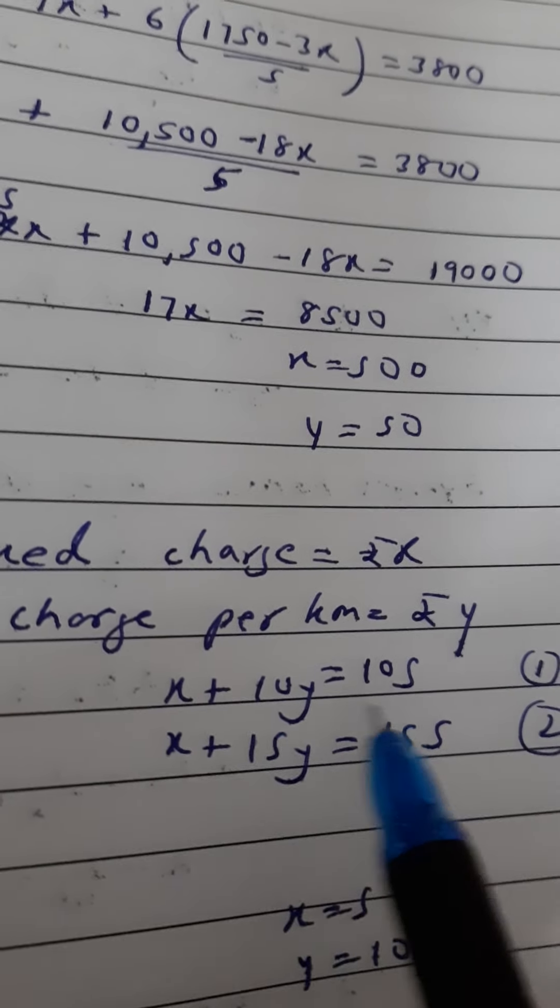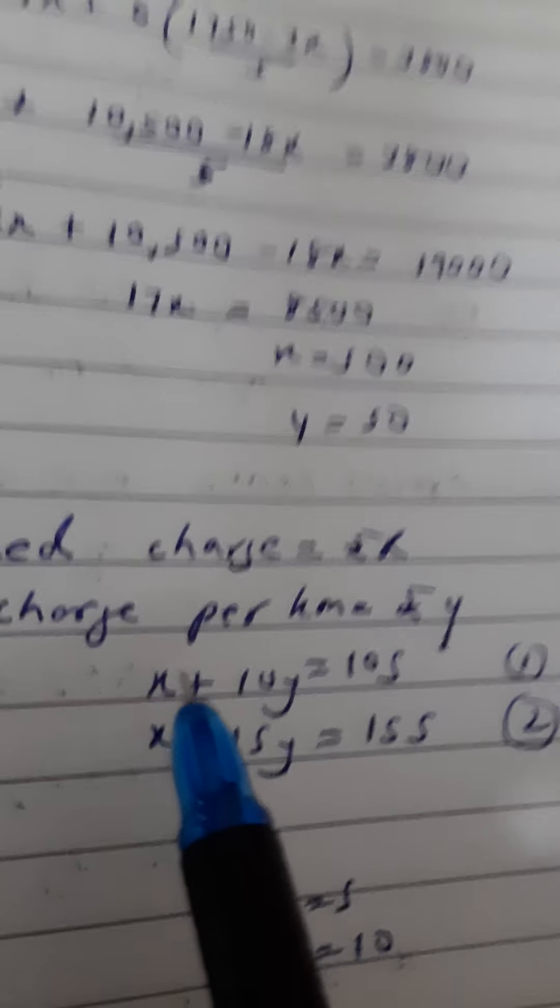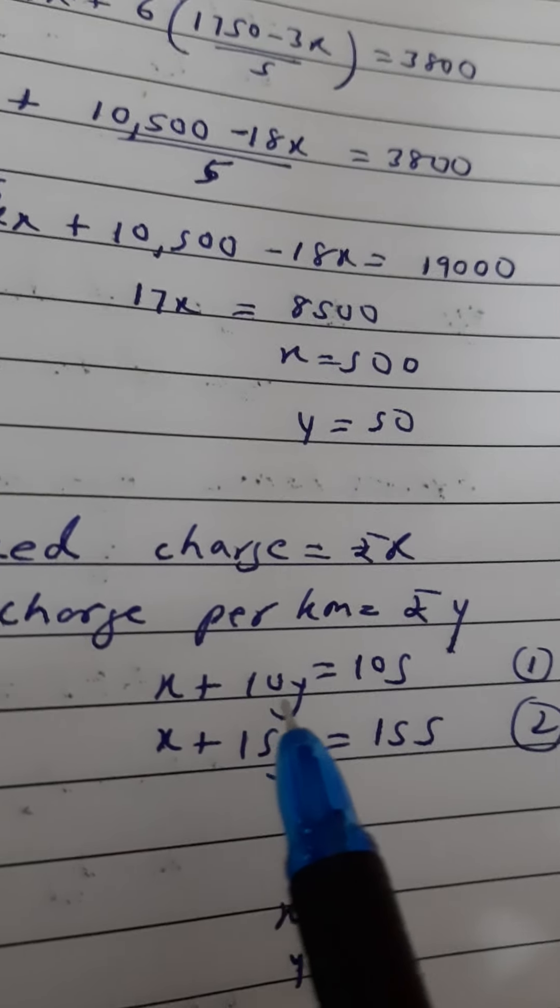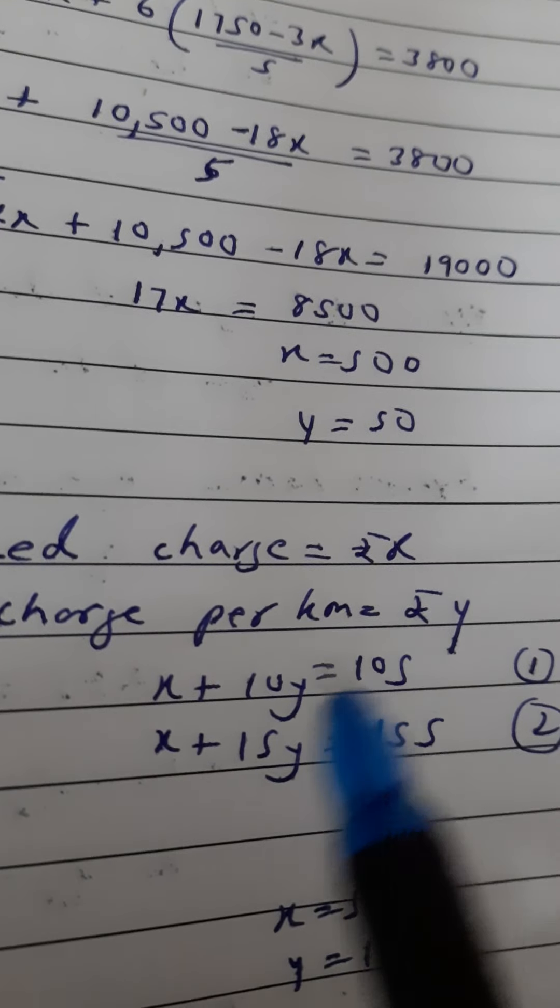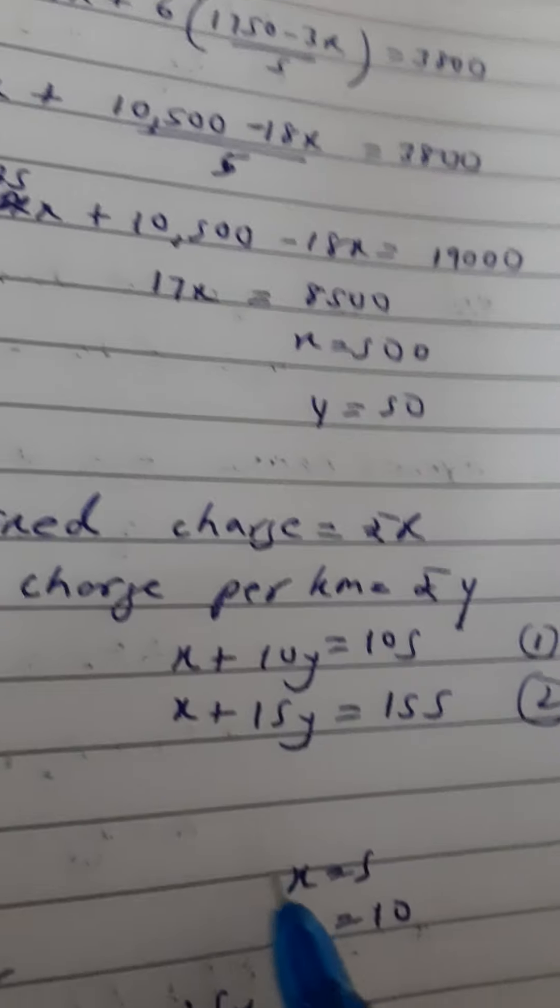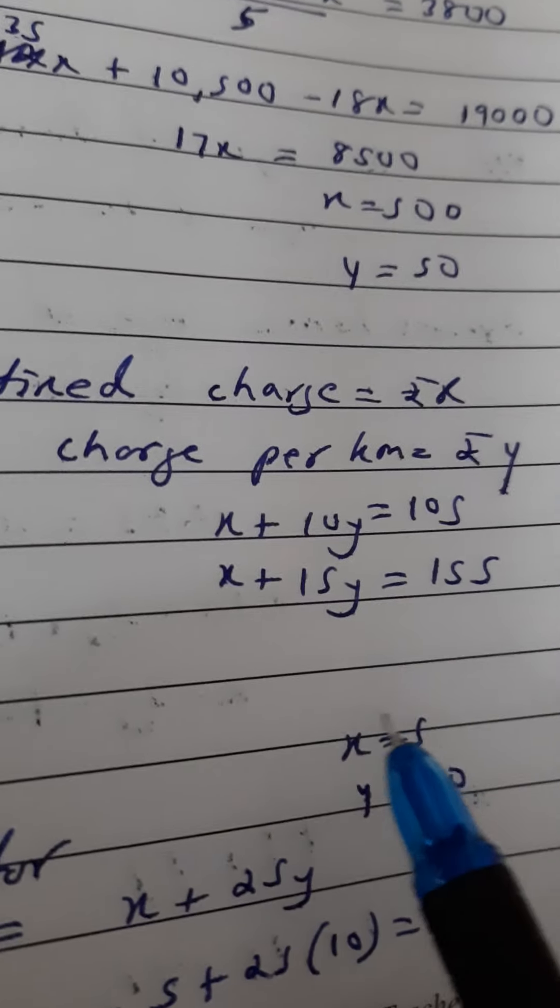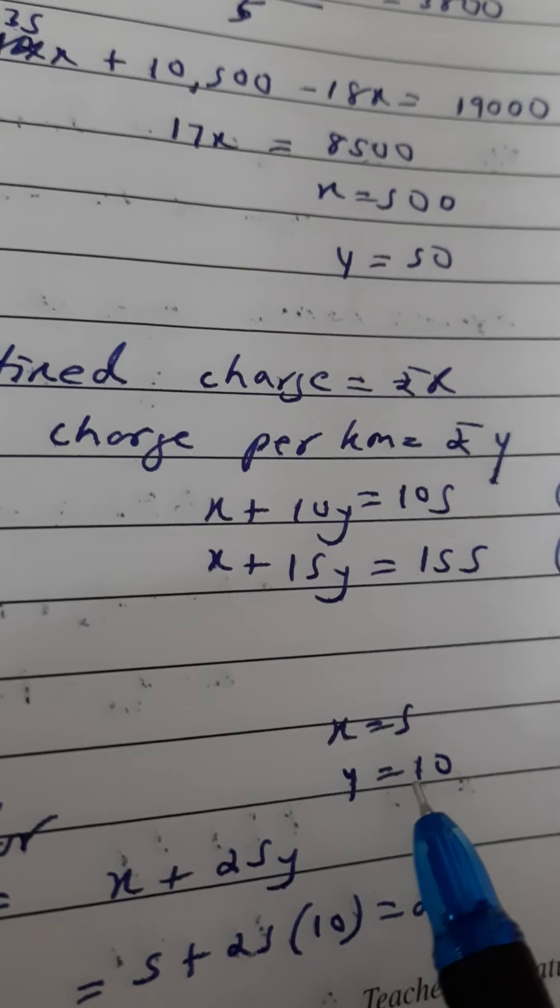Again, the same procedure as we did for substitution. Take out the value of x from here: x equals 105 minus 10y. Substitute this value in equation 2. When you solve, you should get x equals 5 and y equals 10. That means the fixed charge is 5 and the charge per kilometer is 10.